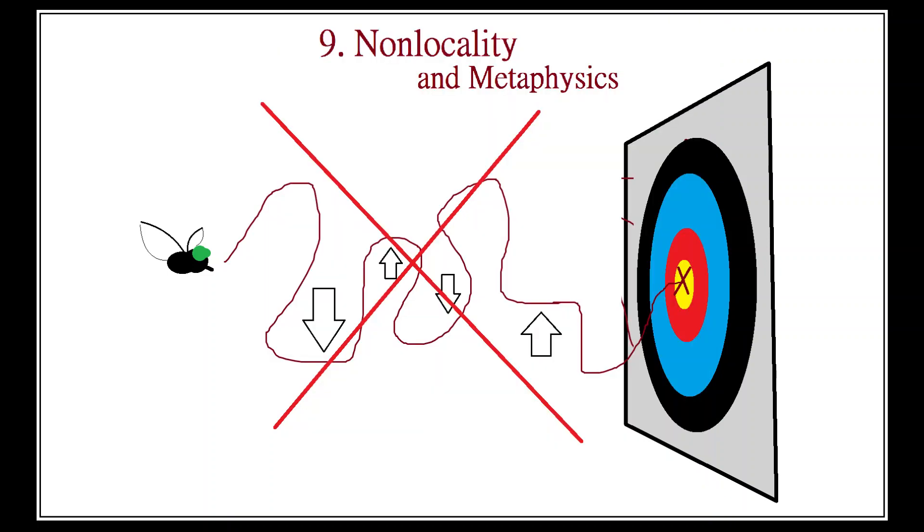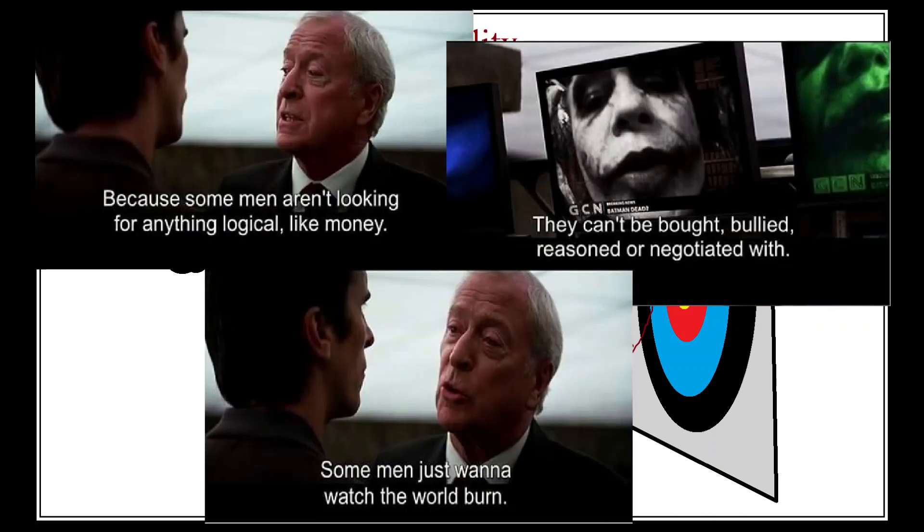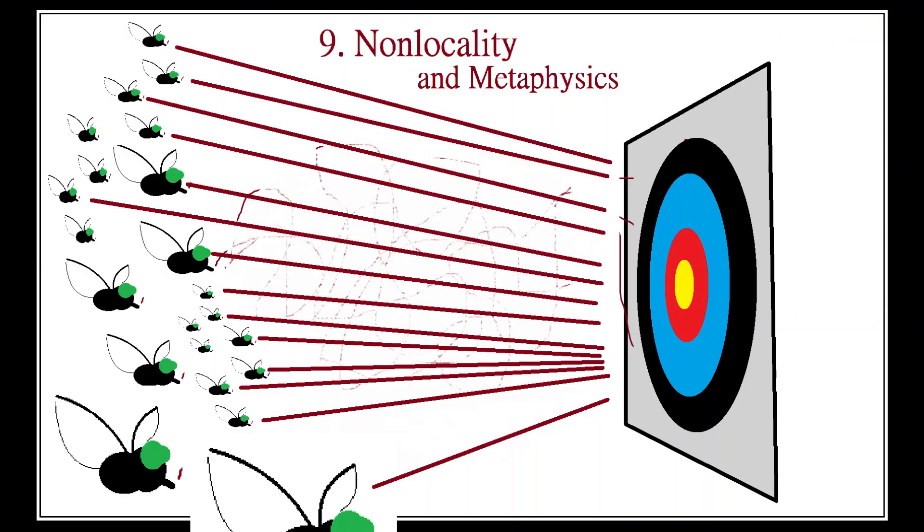The repeatable violation of Bell's inequality indicates that Einstein was wrong on this one. There are no local variables determining the behavior of the individual fly. We cannot account for its flight path by appealing to the wind or to some faint aroma drawing it along, or to anything which affects the fly by touching it, pushing it, acting upon it. The fly really is as good as a swarm until it hits the flypaper.